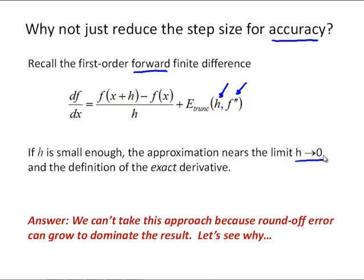A natural thing to think is: why wouldn't we just make h really small? We have a computer and plenty of processing power — why do we need to come up with things like that fourth order centered finite difference approximation, which is a much more complicated formula? The answer is because as h gets smaller, round-off error can grow to dominate the result. In this video, we're going to see why that happens.